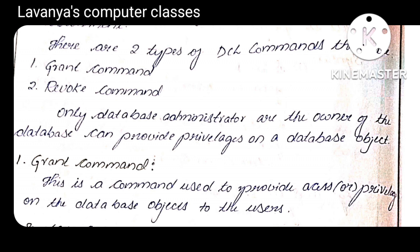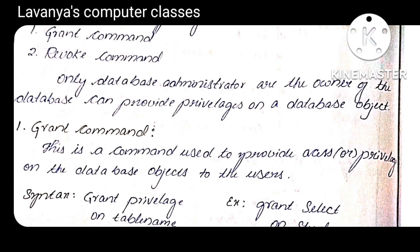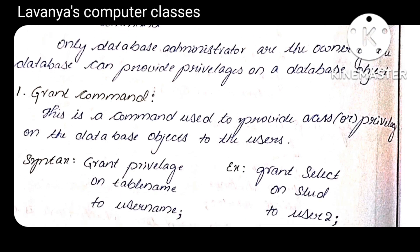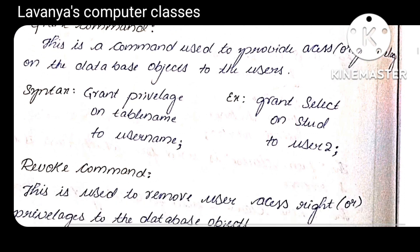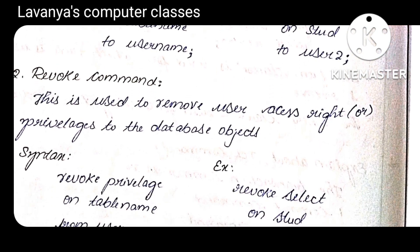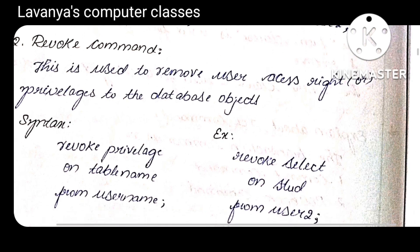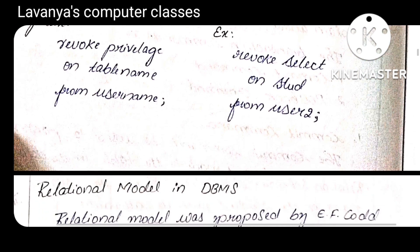DCL — Data Control Language — has GRANT and REVOKE commands. GRANT command is used to give permissions to users. Syntax: GRANT privilege ON table_name TO username. Example: GRANT SELECT ON student TO user — that means on the student table you are giving only SELECT permission. REVOKE command is used to cancel all permissions. Syntax: REVOKE privilege ON table_name FROM username.